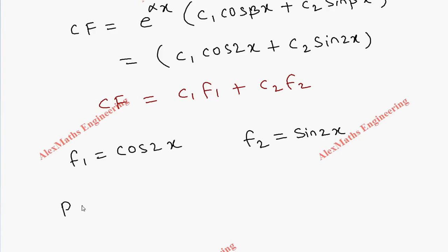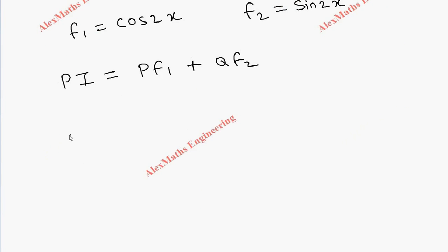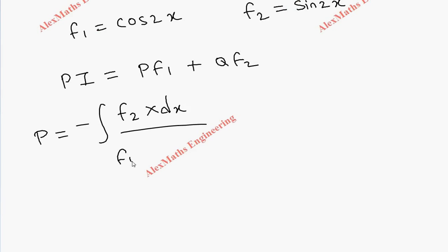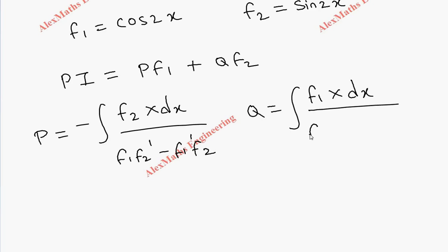The particular integral formula is p·f₁ + q·f₂. For finding p and q we have separate formulas. p = -∫(f₂ · X dx) / (f₁f₂' - f₁'f₂), and both expressions share the same denominator.